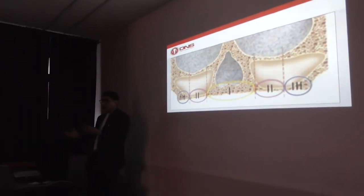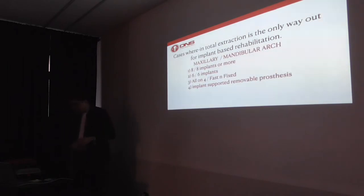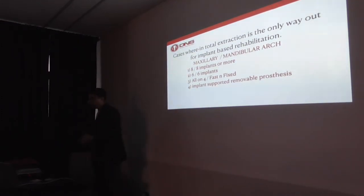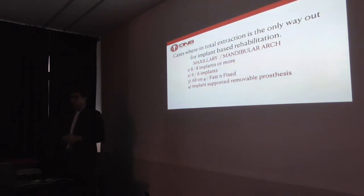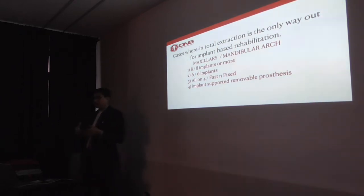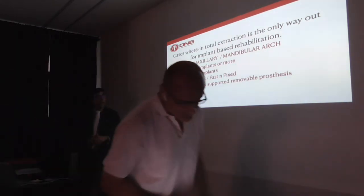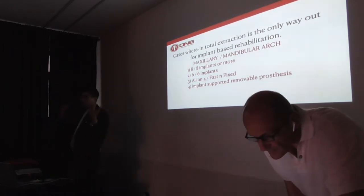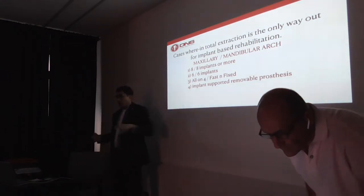The rest of the speakers will cover completely atrophic cases. For total extraction cases, we have many options: eight implants in the upper jaw, eight in the lower, or six implants — many companies now offer six-implant solutions for full-arch rehab. I personally prefer all-on-four, especially when I don't need to go into the sinuses or pterygoid areas, as it is most often a graftless solution requiring minimal grafting.